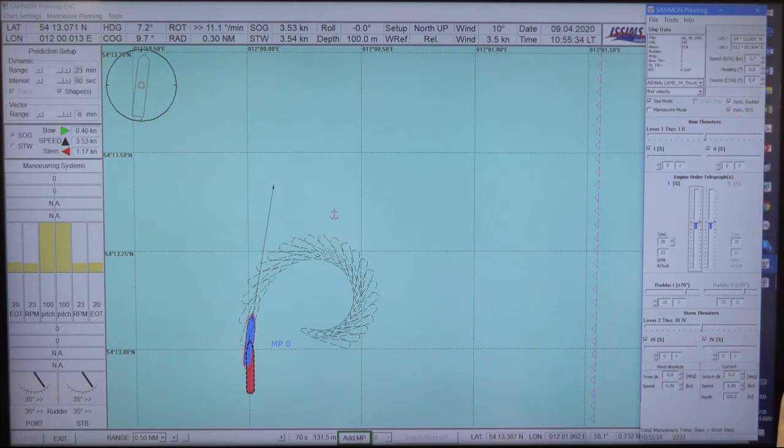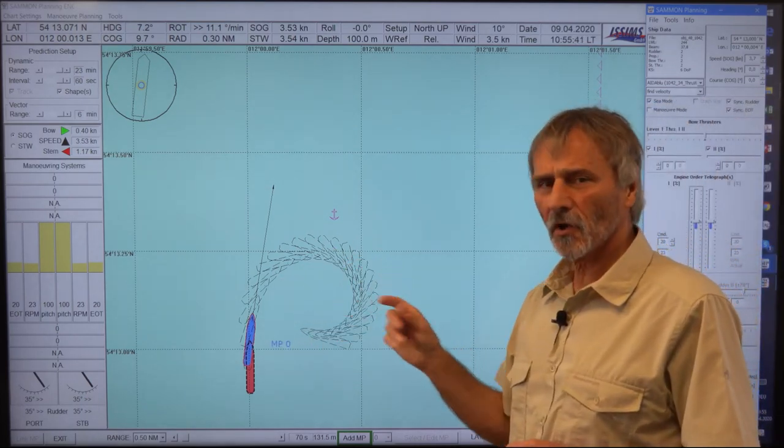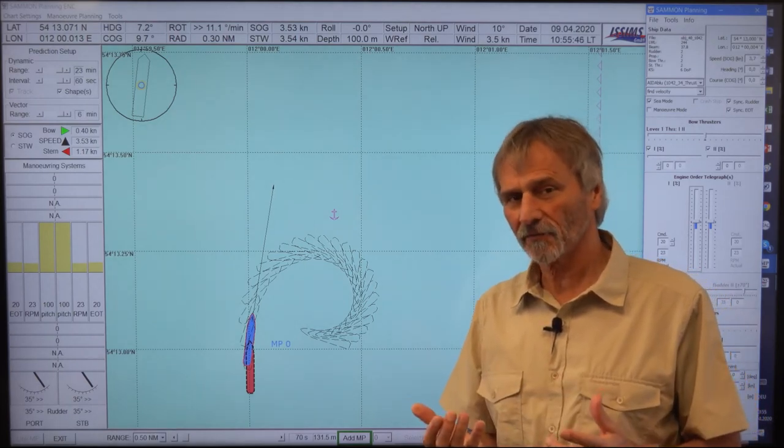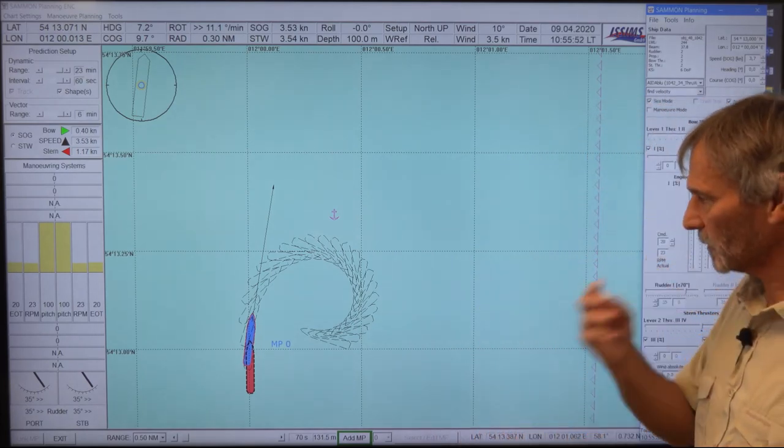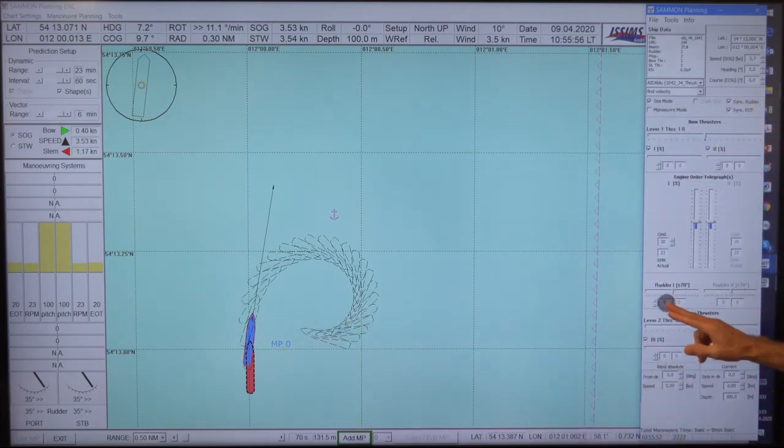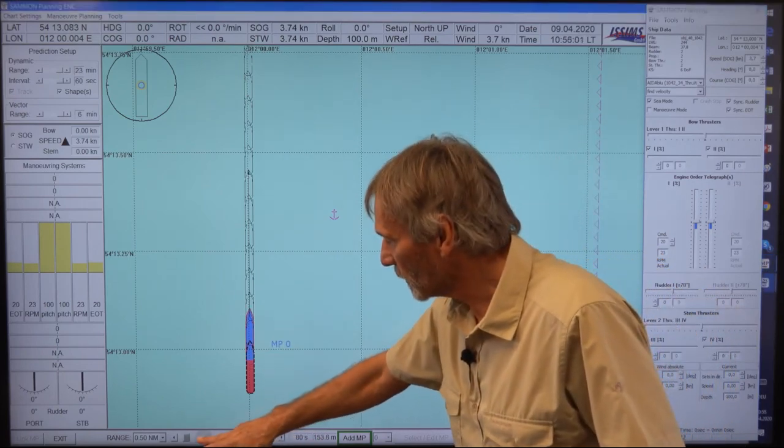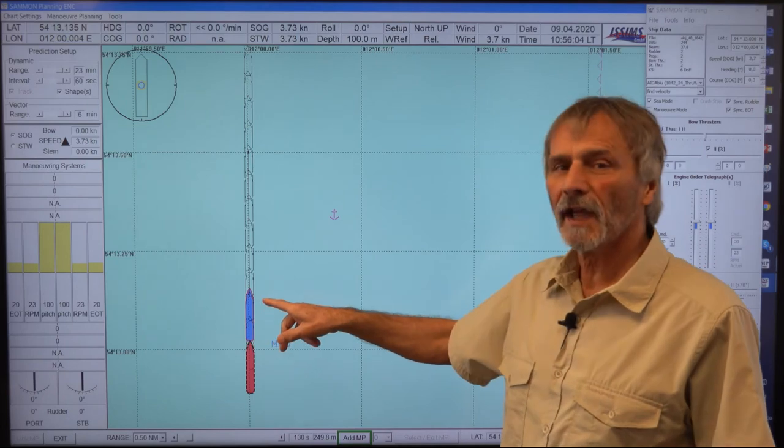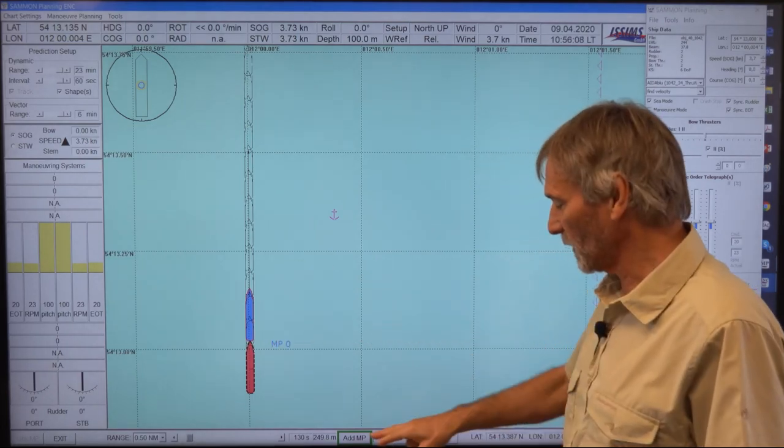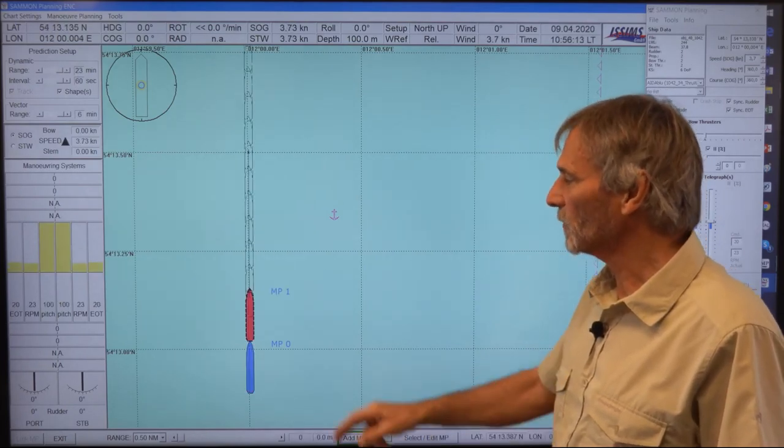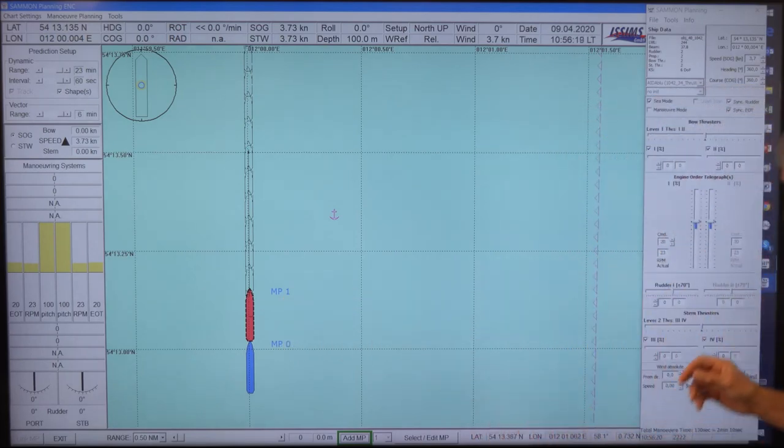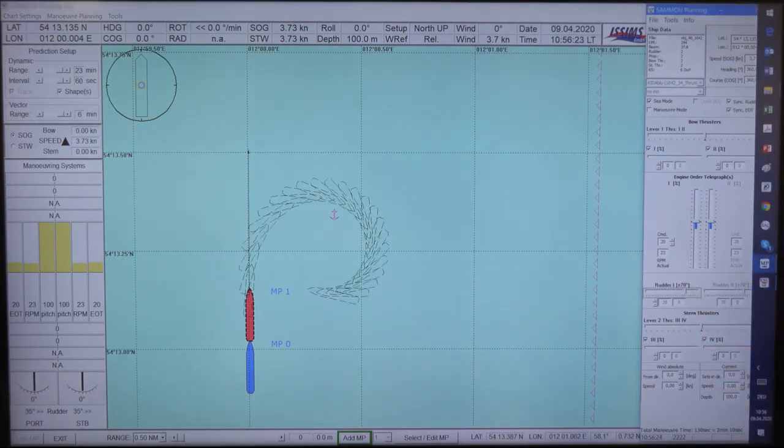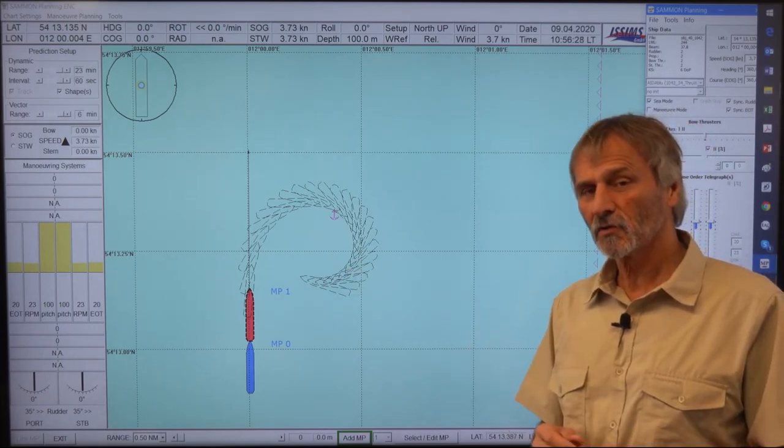So what we want to discuss now is how can we improve the turning quality then? What options do we have to improve our turning capability? For this reason, I will change a little bit the situation. I switch the rudder to midship and I move the ship a little bit out of the initial track and start the maneuver here on purpose. So I add a maneuvering point and then the focus is now here and all maneuvers which I do here are applied in this position. So the first what we want to do is switch back to our 35 degrees. So this is our reference track.